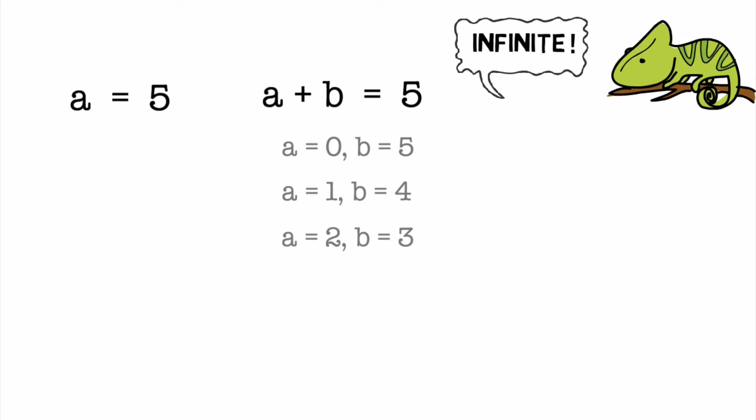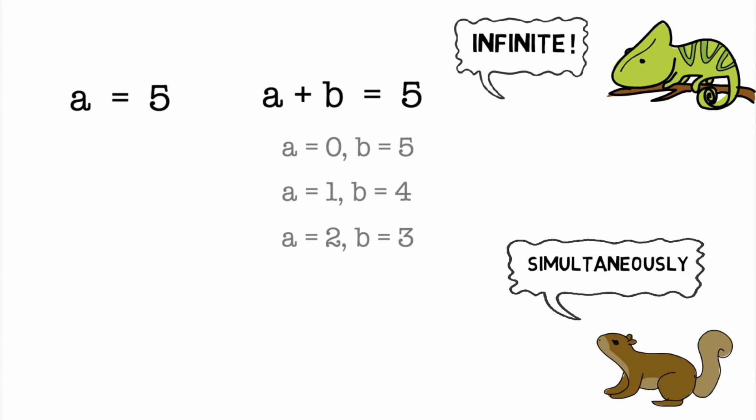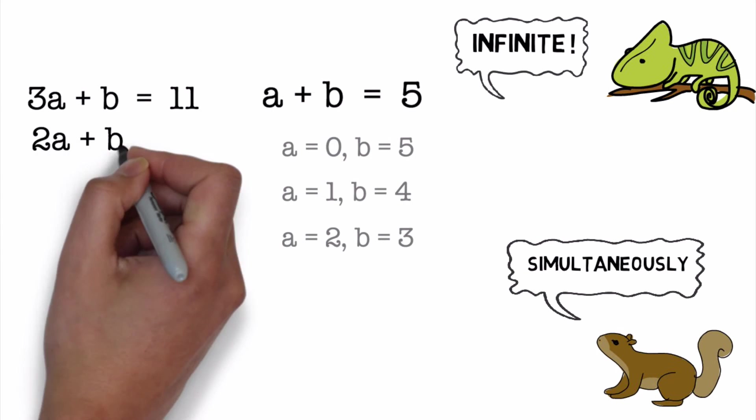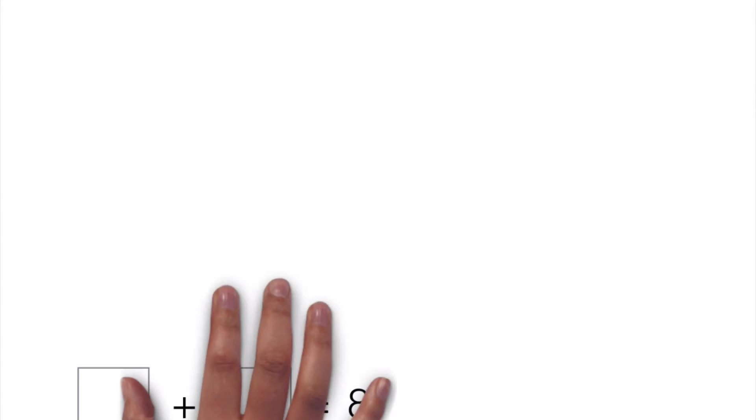To be able to solve an equation like this, another equation needs to be used alongside it. That way it is possible to find the only pair of values that solve both equations at the same time. Such equations are called simultaneous equations. Here's an example. Okay, now with this background let's return back to our problem.